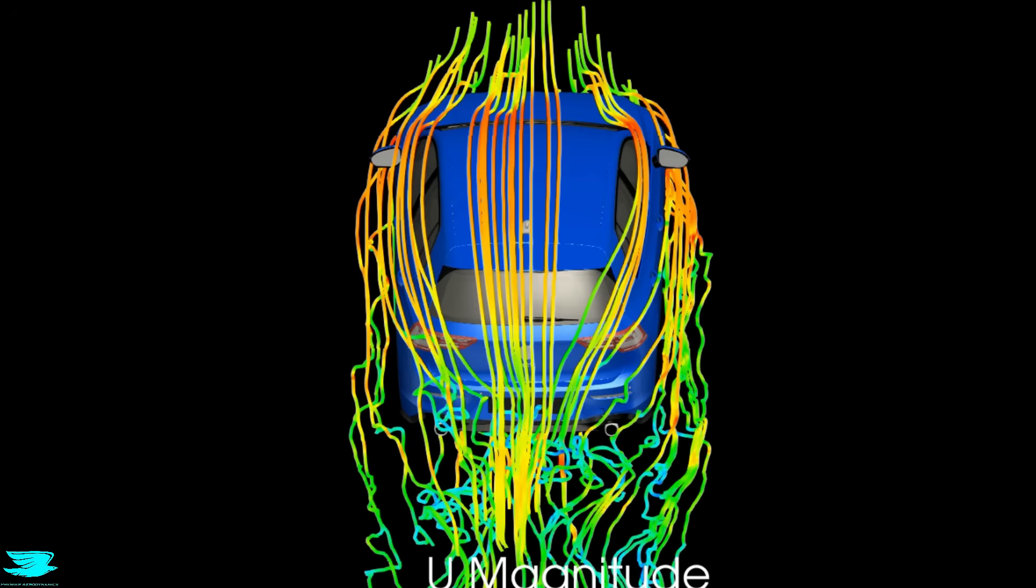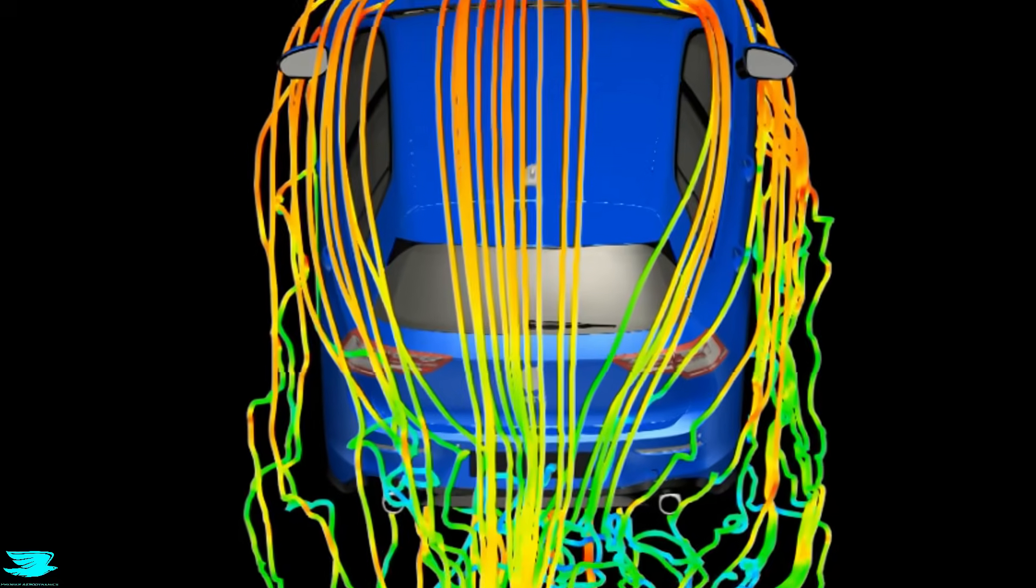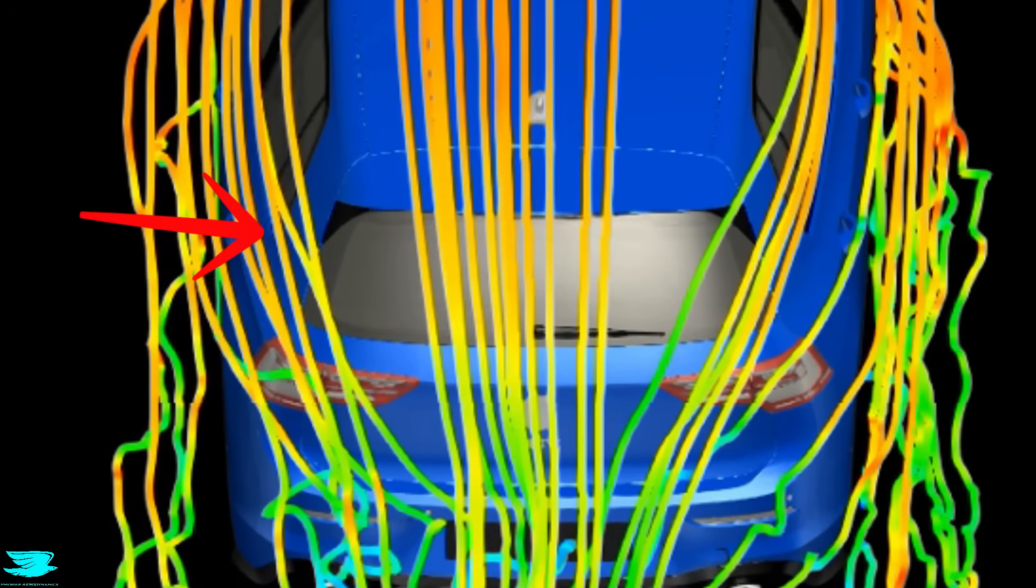Then Volkswagen angled the C-pillars in. If you look closely, you can see how the blue bit between the side window and the rear window is angled inwards. That inwards direction guides the flow along the same angle. So the flow is guided inwards too, and that helps reduce the wake size and hence the drag of the car.